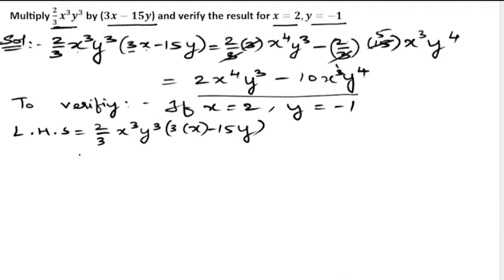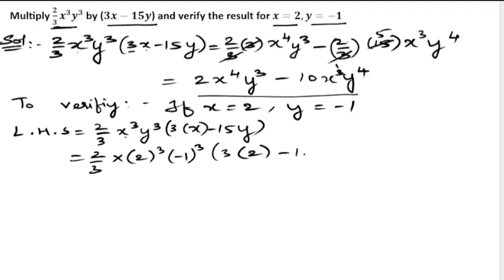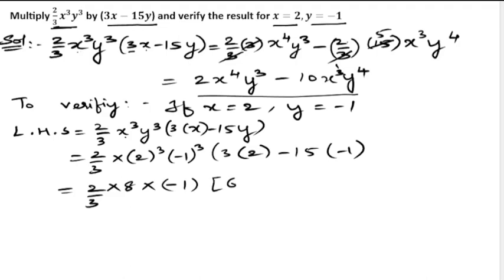Substituting x = 2 and y = −1: we get 2/3 × 2³ × (−1)³ × (3 × 2 − 15 × (−1)). Now, 2³ = 8, and the cube of a negative value is negative, so (−1)³ = −1. Also, 3 × 2 = 6, and minus × minus = plus, so 15 × (−1) becomes +15.